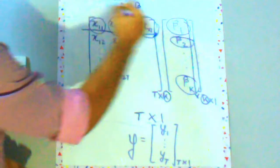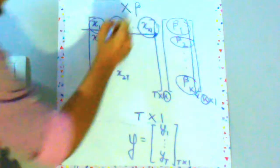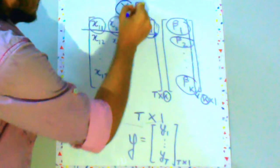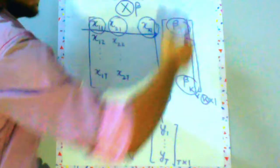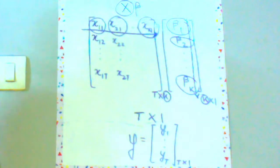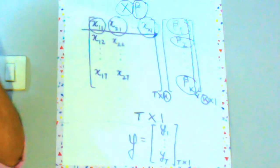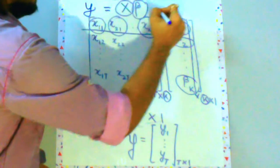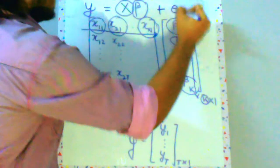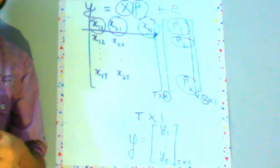Now this matrix is known as the design matrix or represented by x and this matrix is known as the coefficient matrix or it is represented by beta. So you can also say that y is equal to x beta plus e. So I will rewrite this in a more digestible manner.